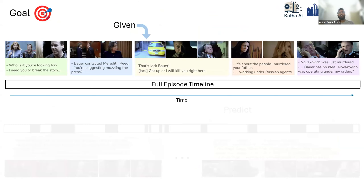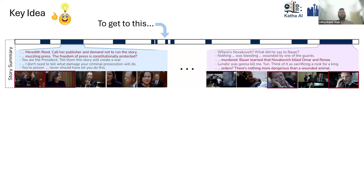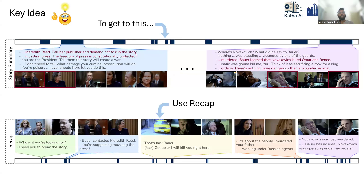Our problem statement: given a TV episode, we are trying to predict a story summary — a multimodal story summary having both video and dialogues. The key idea: what is a story summary? It can be thought of as uncut segments in an episode of a TV show which, when stitched together, give you enough context to recall the whole episode. To obtain these story summaries, we use recaps as a supervising signal. Recaps are short video sequences shown at the beginning of an episode, consisting of key story moments.